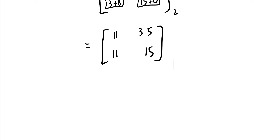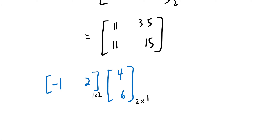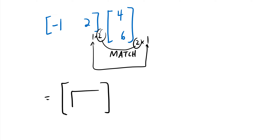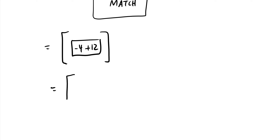Let's look at an example with different dimensions. Multiply the matrix [-1, 2] — one row by two columns — by the matrix [4; 6] — two rows by one column. The inner dimensions match, so we can multiply, and the result will be a 1×1 matrix. Row by column: -1 times 4 is -4, and 2 times 6 is 12, giving 8. The result is the 1×1 matrix [8].